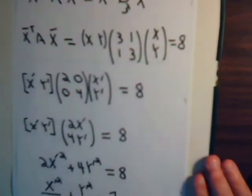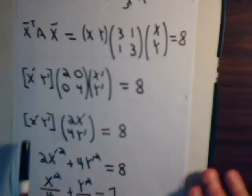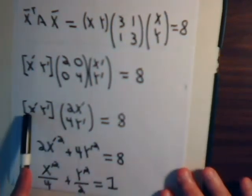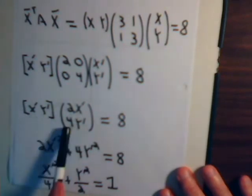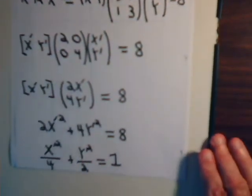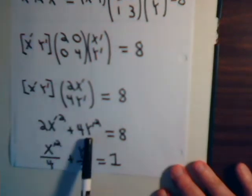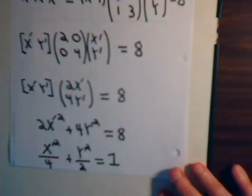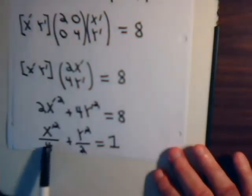So now, multiply this. We have 2x prime, 4y prime. Multiply it by this. We have this first element is times the first row. The second element is times the second row. So we have 2x prime squared plus 4y prime squared equals 8. Divide it by 8. And we have this equation.